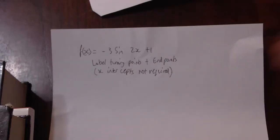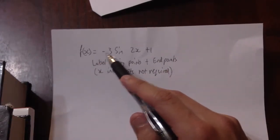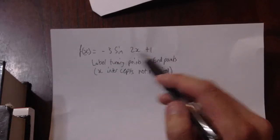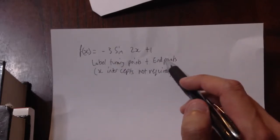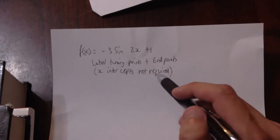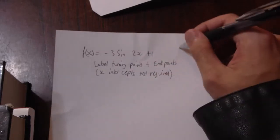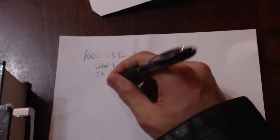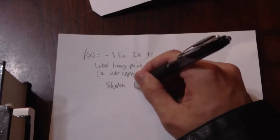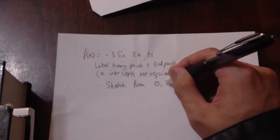This is for Jeremy. f(x) equals minus 3 sine 2x plus 1. Label turning points and endpoints, x-intercepts not required. Sketch from 0 to 2π.